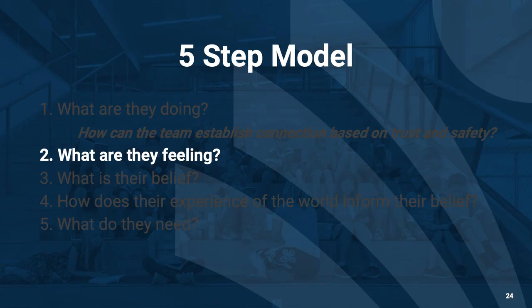If you can create that safe space, the next step is to figure out what they're feeling. We can't know what someone else is feeling, so we will have to reflect on what the student can communicate to us. Keep in mind that students may struggle to communicate their feelings because they may not even understand their own feelings themselves. That's what we call interception — the ability to understand and feel our own body — and many people who are chronically struggling have trouble with interception.